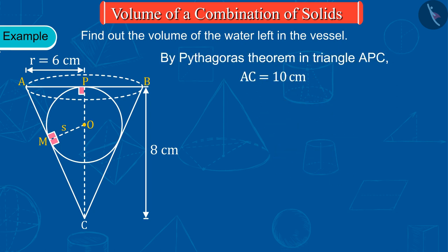Also, from the figure, we can say that CP is equal to the sum of CO and OP, from which we get CO equals to 8 minus S.